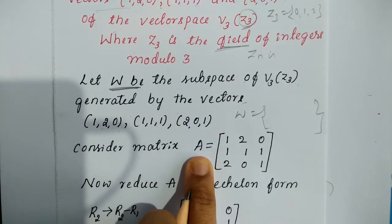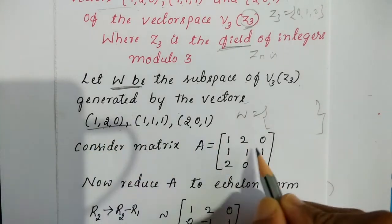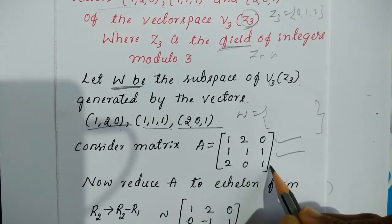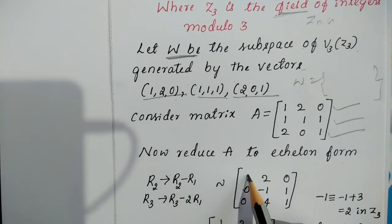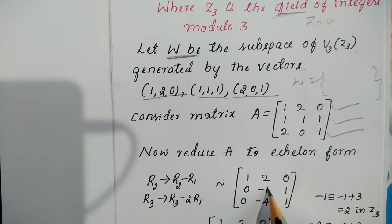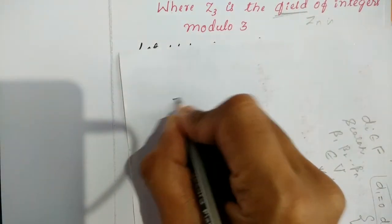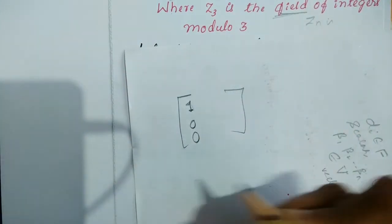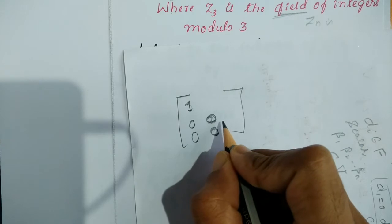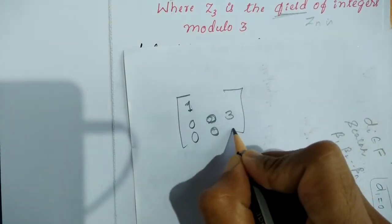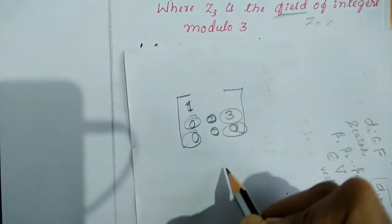Now reduce this matrix to echelon form. For echelon form: the first entry must be 1, and the below entry must be 0. The next non-zero entry — below that non-zero entry must also be 0. So, each leading non-zero entry should have zeros below it. The first entry in row 1 is 1 (non-zero). We need to make the entries below it (1 in R2 and 2 in R3) equal to 0. So apply R2 → R2 minus R1, and R3 → R3 minus 2·R1.